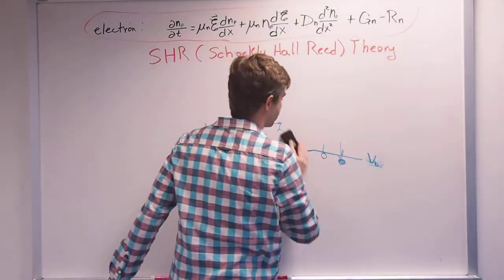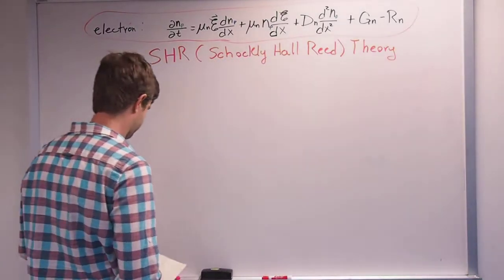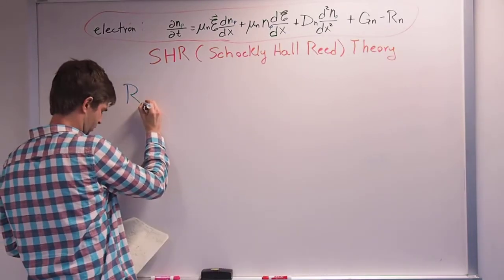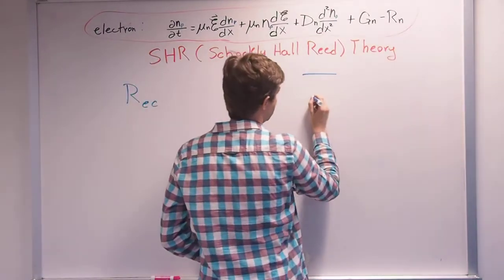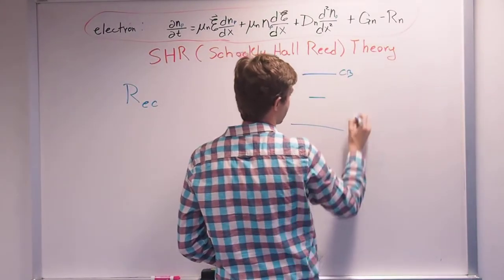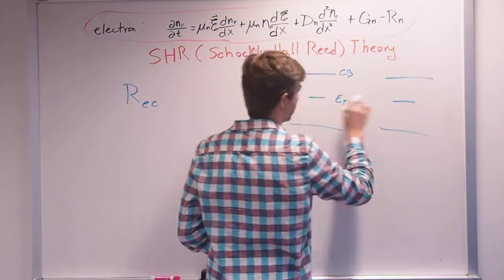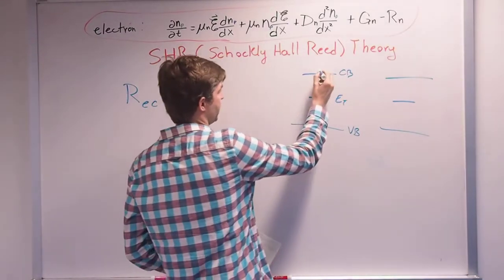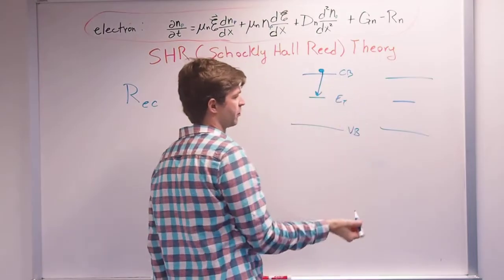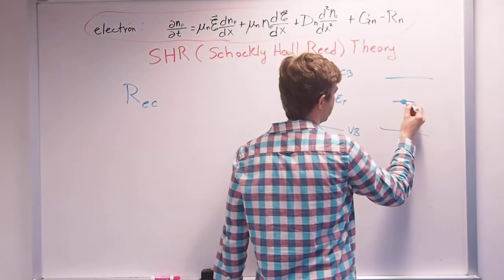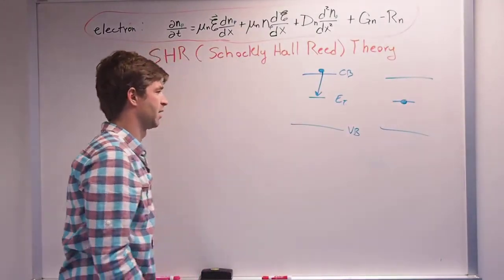There are four different mechanisms in Shockley-Hall-Reed recombination. The first one is called the rate at which electrons are captured. We have the trap band, the conduction band, and the valence band. Step one: you have an electron up in the conduction band, and it loses energy and falls back down to this trap state, leaving no more mobile carriers in the conduction band.